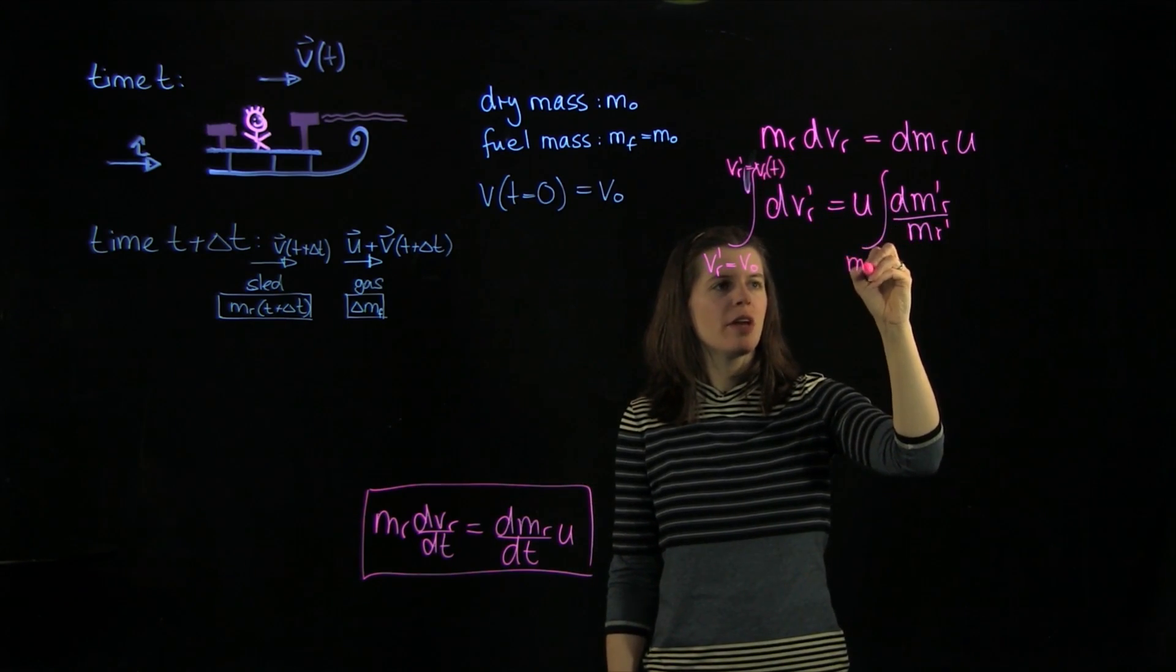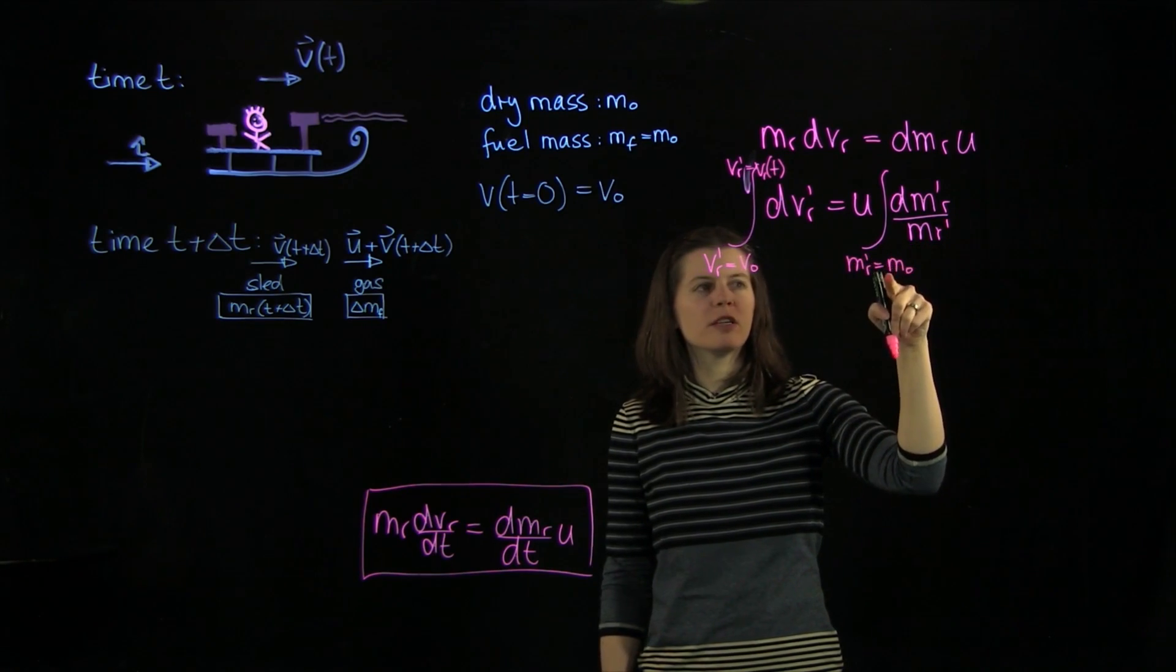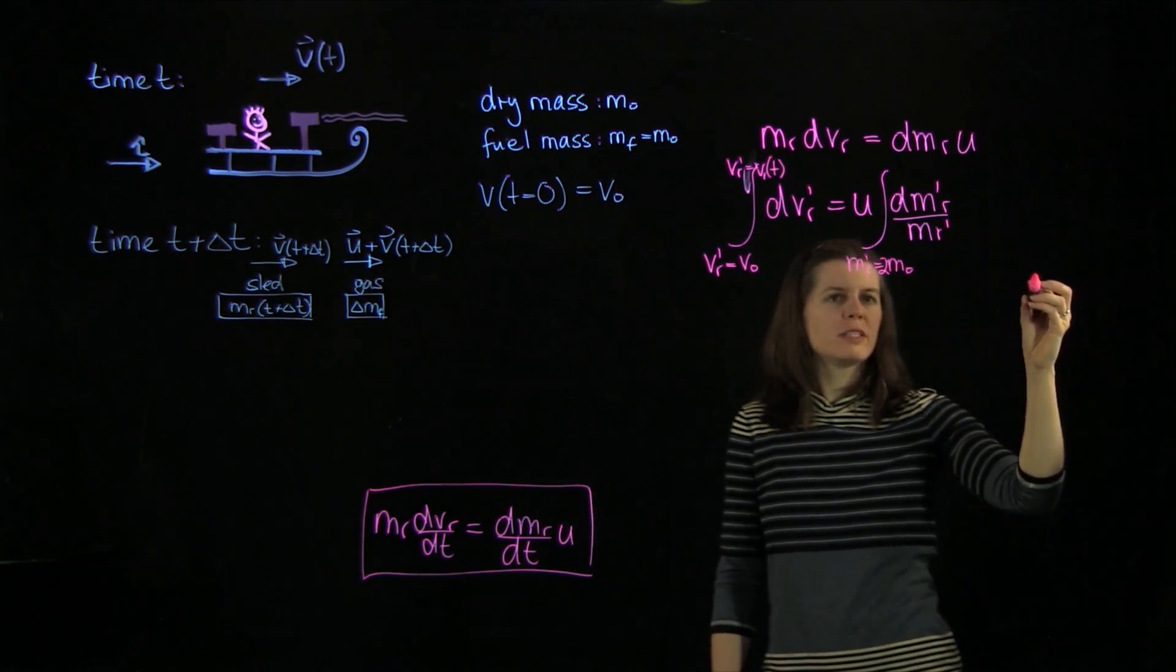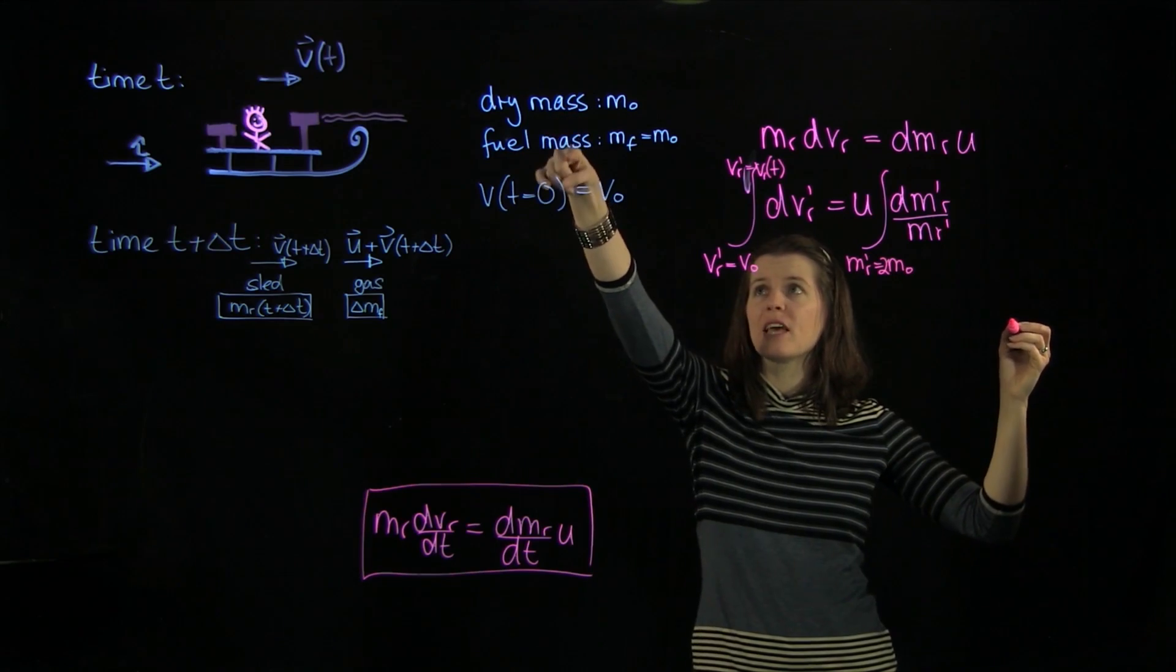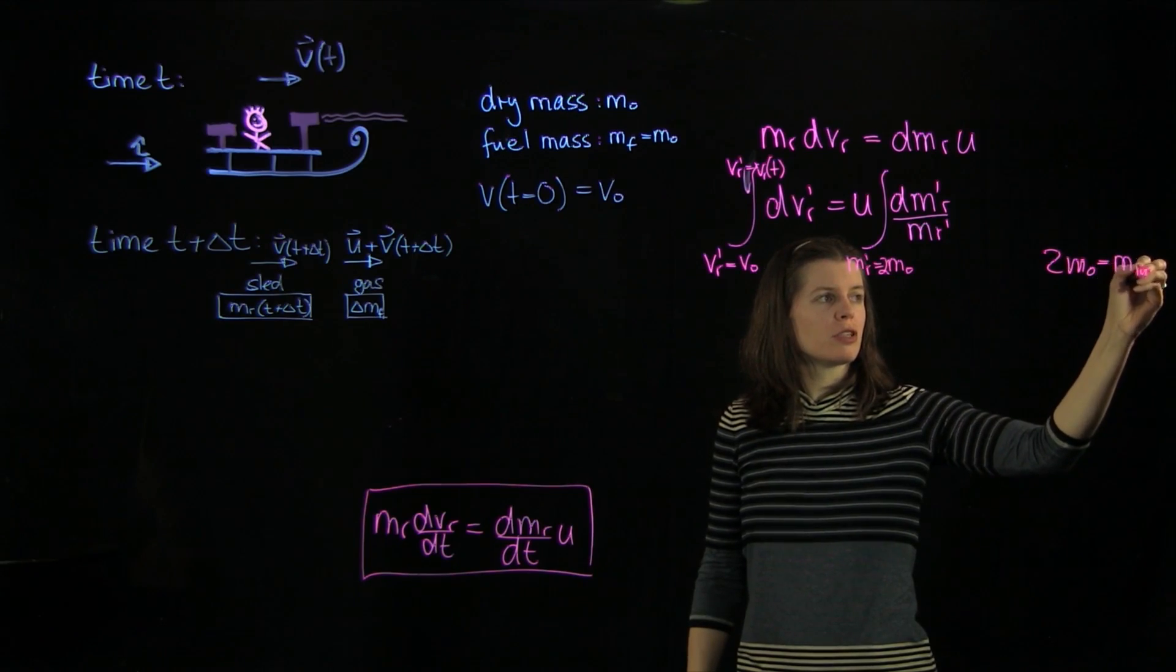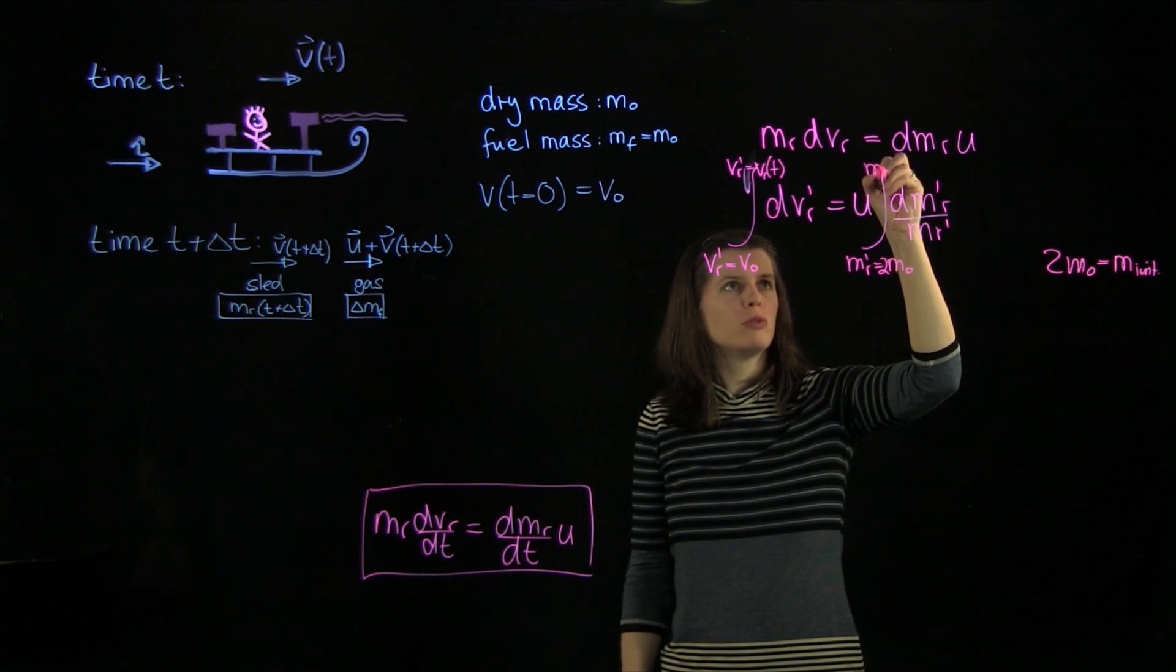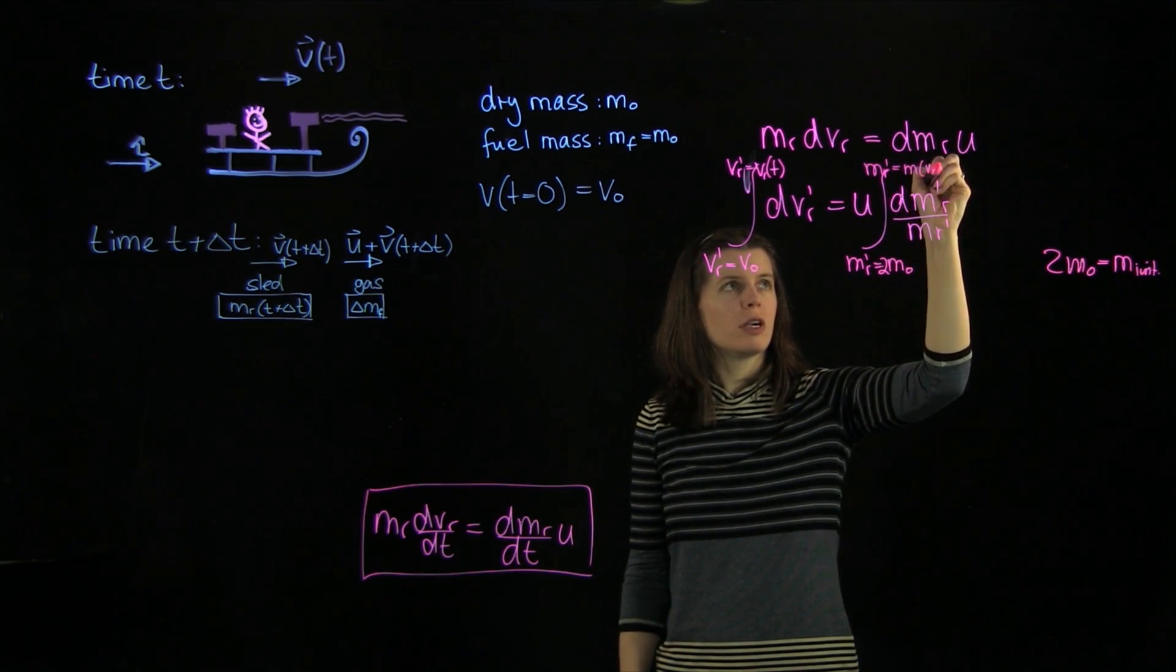And for the mass, we have mr prime equals m0. Actually, not quite m0, it's 2m0, because the initial mass of this is the dry mass and the fuel mass. So that's 2m0, this is the initial mass. And then we go to mr prime equals m of vr.